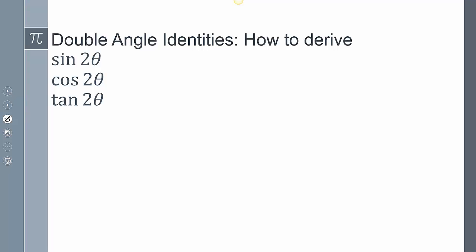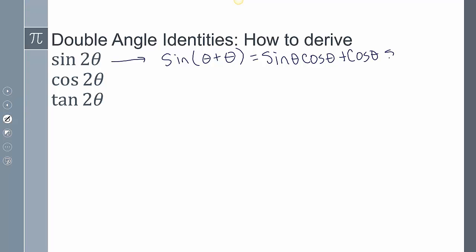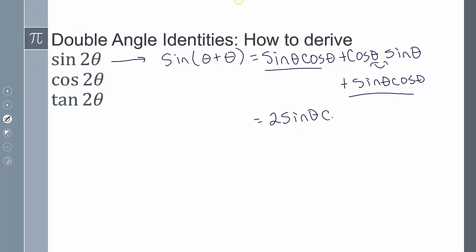We derive the double angle identities from our sum and difference identities. For example, sine of 2θ can be looked at as sine of (θ + θ). The sum identity gives sine θ cosine θ plus cosine θ sine θ, which simplifies to 2 sine θ cosine θ. This is the double angle identity for sine of 2θ.